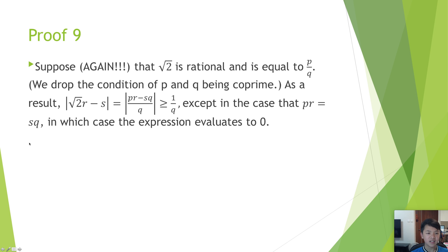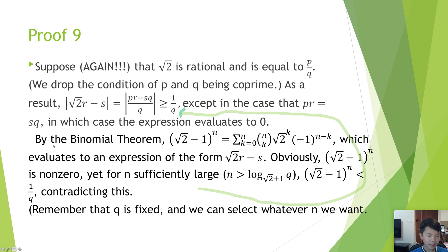Proof 9. Suppose that the square root of 2 is rational and is equal to p over q. As a result, the magnitude of square root of 2 times r minus s is at least 1 over q, except in the case that pr equals sq, in which case the expression evaluates to 0. By the binomial theorem, the quantity (√2 + 1)^n is expressed in a certain form, which evaluates to an expression of a specific form. Obviously it is not 0, yet for n sufficiently large it is less than 1 over q, yielding a contradiction.